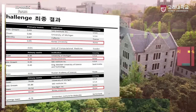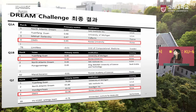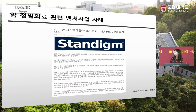드림 챌린지의 3문제 최종 결과에서, 한국의 스타트업 기업인 스탠다임이라는 팀이 세 번째 문제에서 3등을 한 성적을 거두었고, 이 스탠다임이라는 기업에서 이때 개발한 알고리즘을 가지고 30억의 투자를 유치했다고 합니다.